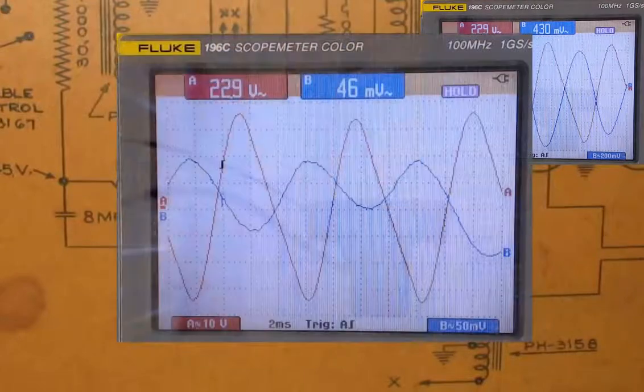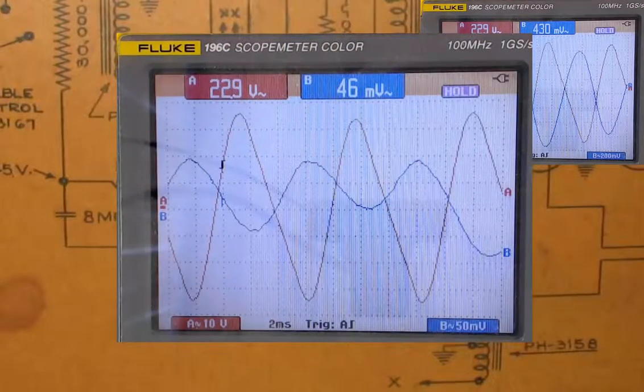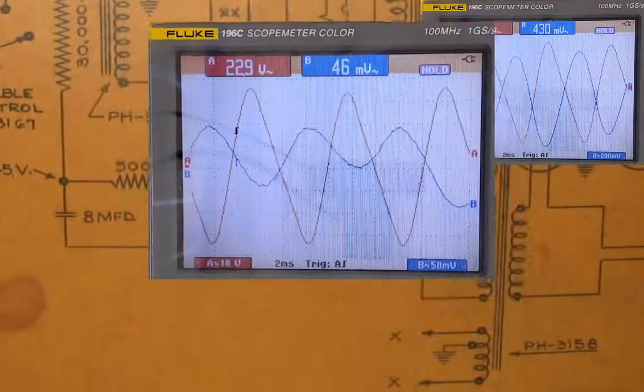The first RC reduced it from 430 millivolts down to 46 millivolts, which is not quite a factor of 10.